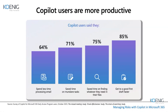Copilot users report significant productivity gains. 64% spend less time processing email, 71% save time on mundane day-to-day activities, 75% save time on finding what they need in their files — you can simply instruct Copilot to check your OneDrive and it brings results within seconds. 85% say they get to a good first draft faster. These are the kinds of experiences Copilot users are seeing.